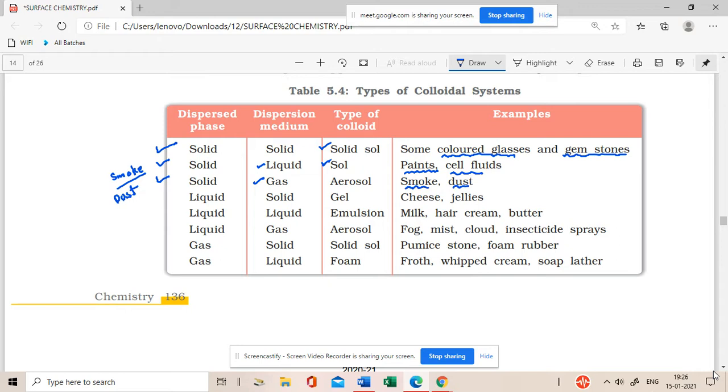A liquid dispersed in a solid, that means solid inside the liquid is dispersed - cheese, jellies. A liquid dispersed in a liquid is known as an emulsion - milk, hair cream, butter.